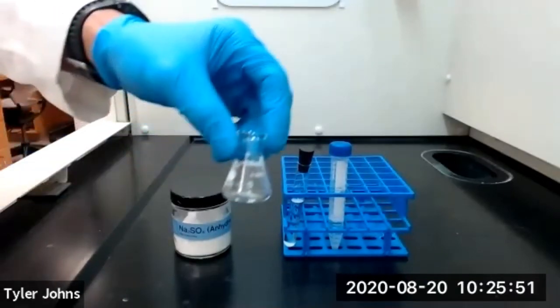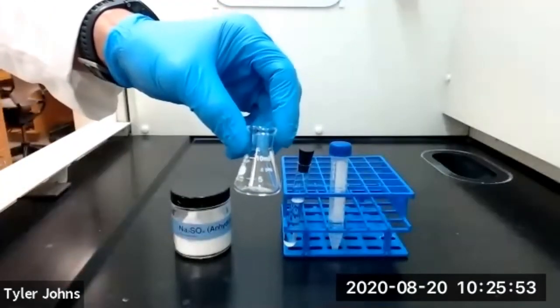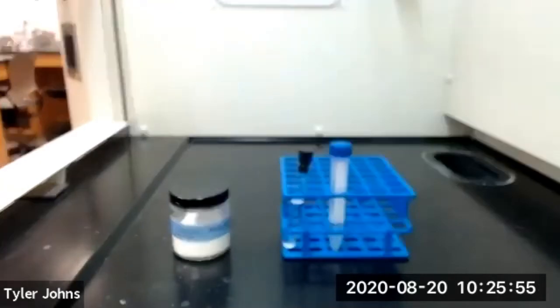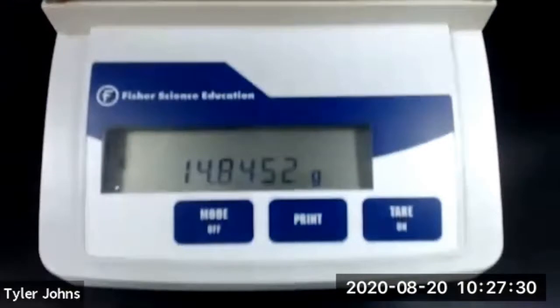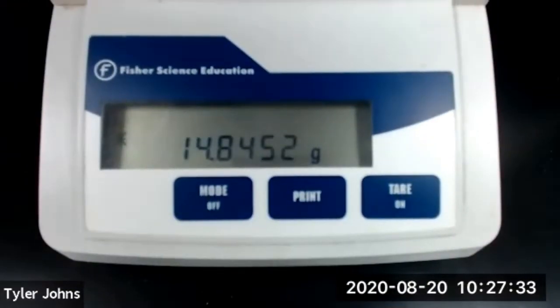The mass of our 10 milliliter Erlenmeyer flask is 14.8452 grams.